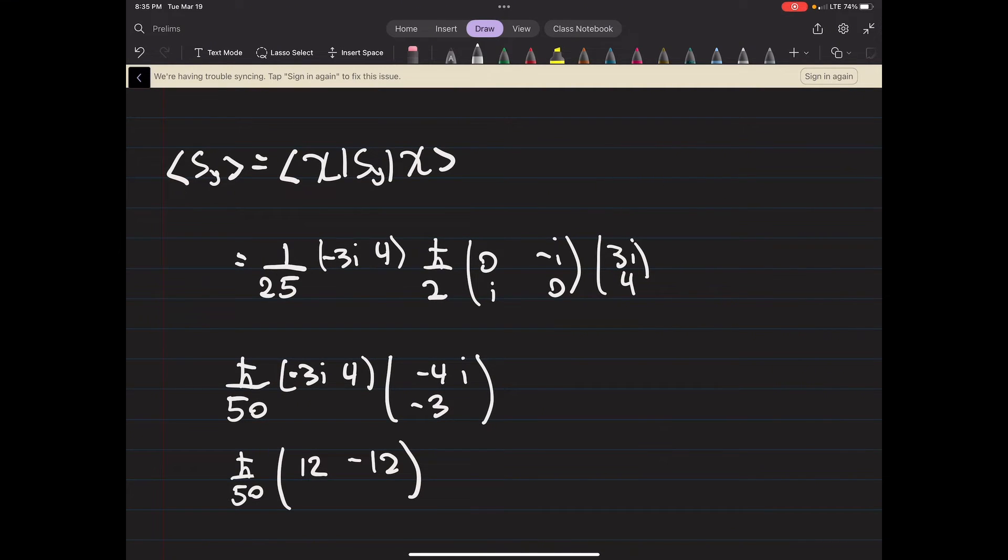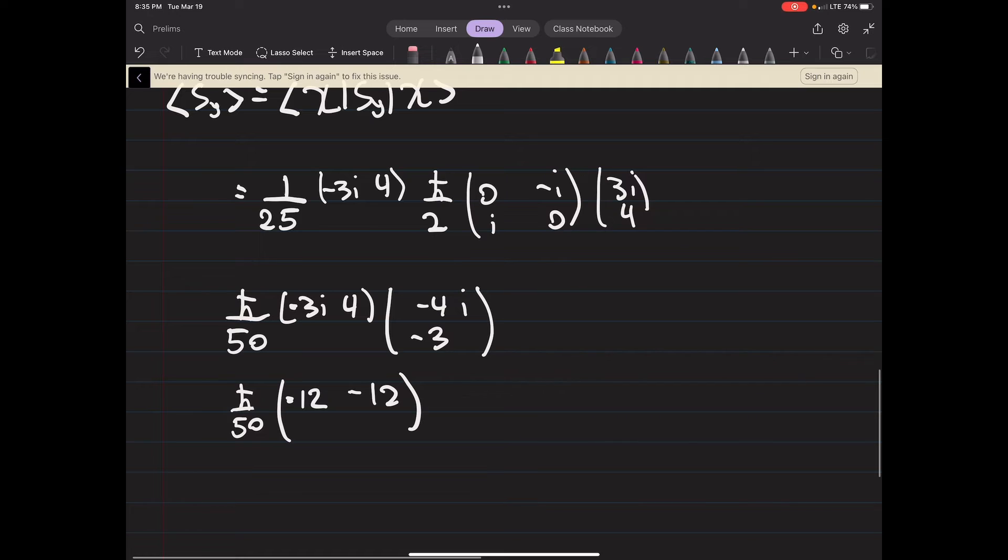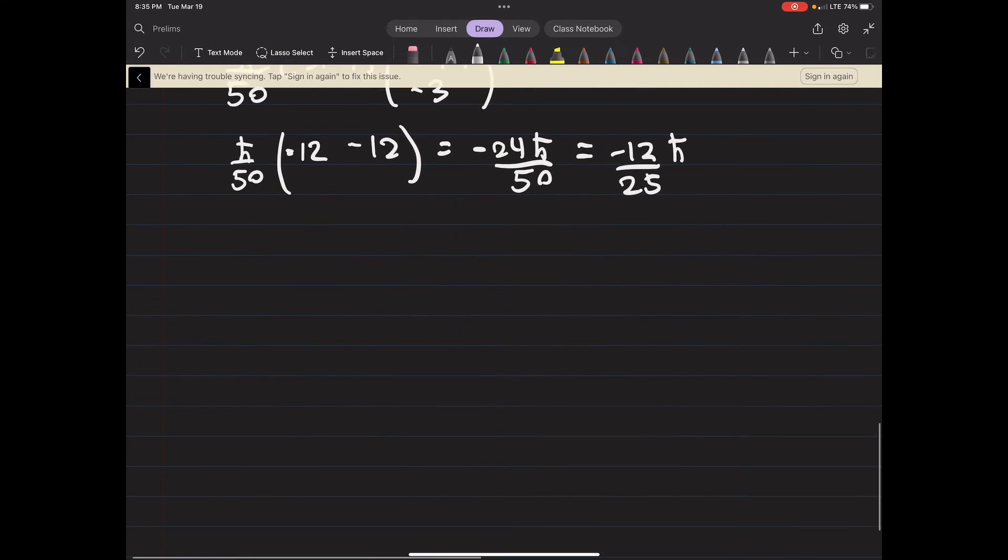I think I am missing a sign somewhere. Ah, right here - I was about to say that shouldn't be 0, so that makes this negative. So this will be -24 h bar over 50, and 2 goes into both of those, so -12 over 25 h bar. And there's no other way to simplify that, so that is all we have to do there.